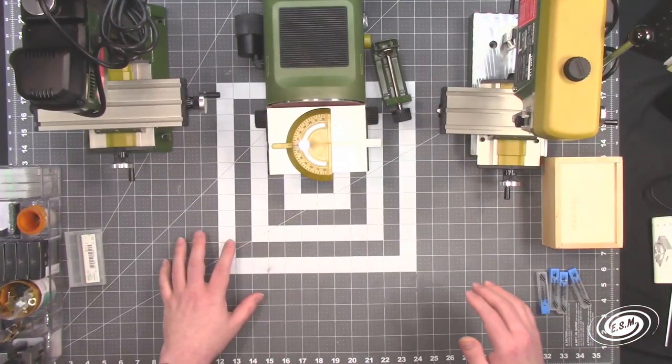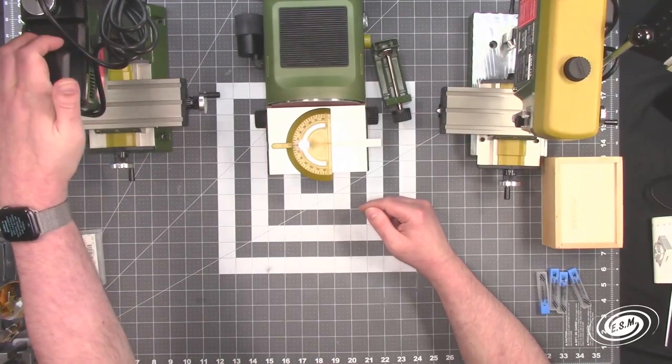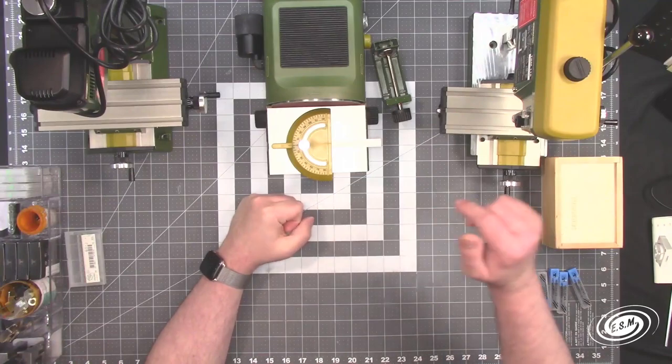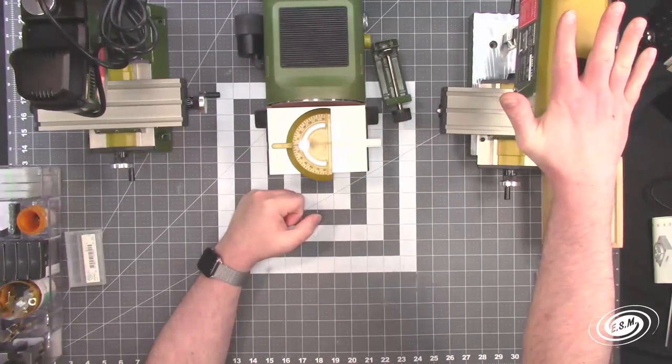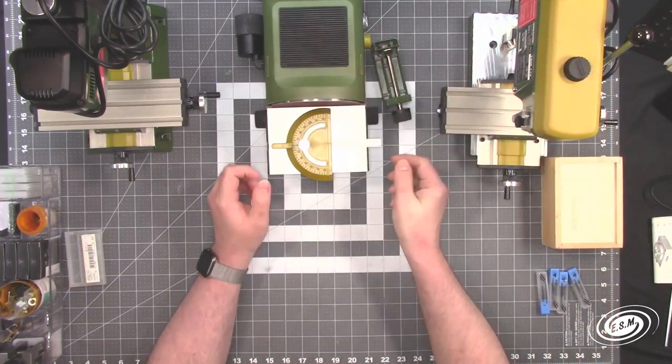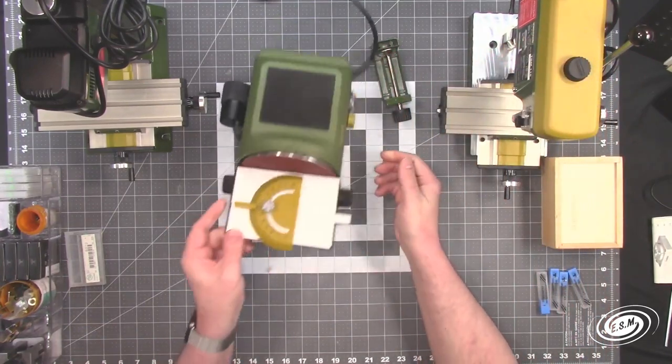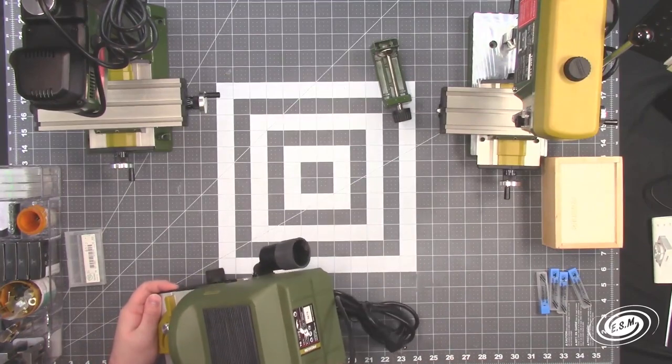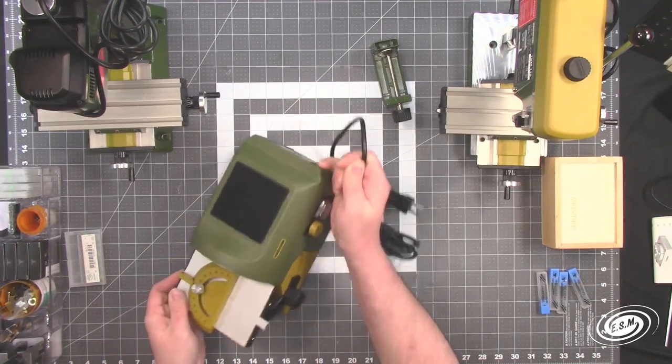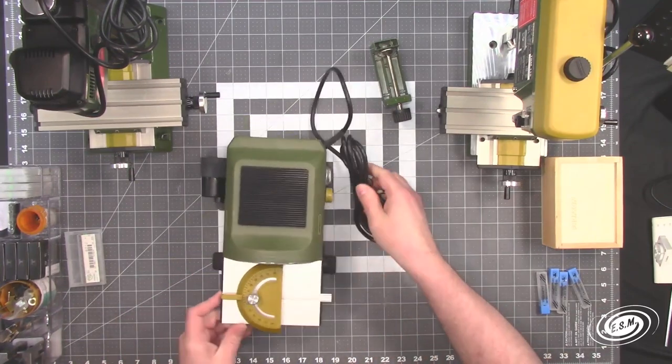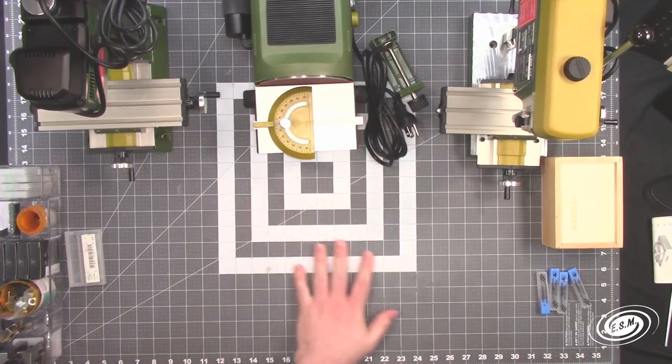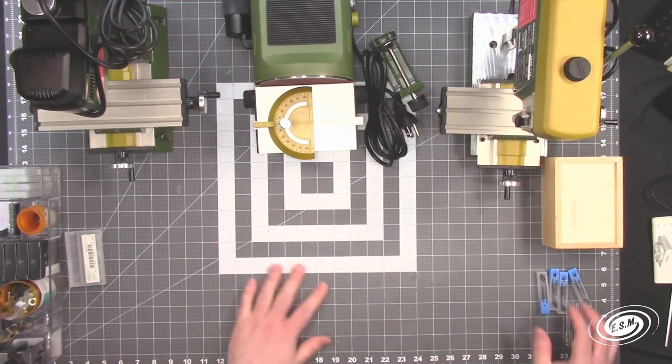Here is what we have. We have a Mini Mill, the Proxxon MF70. We have the Mini Drill Press, the Proxxon TBM115. And then we have a Proxxon Mini 5-inch Disc Sander, model TG125-E. These are high quality machines, not like what you would get with a Dremel Drill Press that is inaccurate.